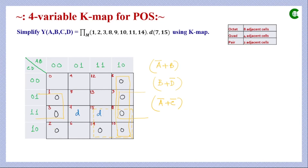We check for one more quad. One don't care term and one zero remain; two cells plus two adjacent cells form a new quad. Evaluating: A changes (eliminated), B is 0 (stays B), C is 1 (becomes C'), D changes (eliminated). The simplified term is B + C'. No other quad is possible — the remaining don't care term cannot form a group on its own, as at least one actual zero is required.